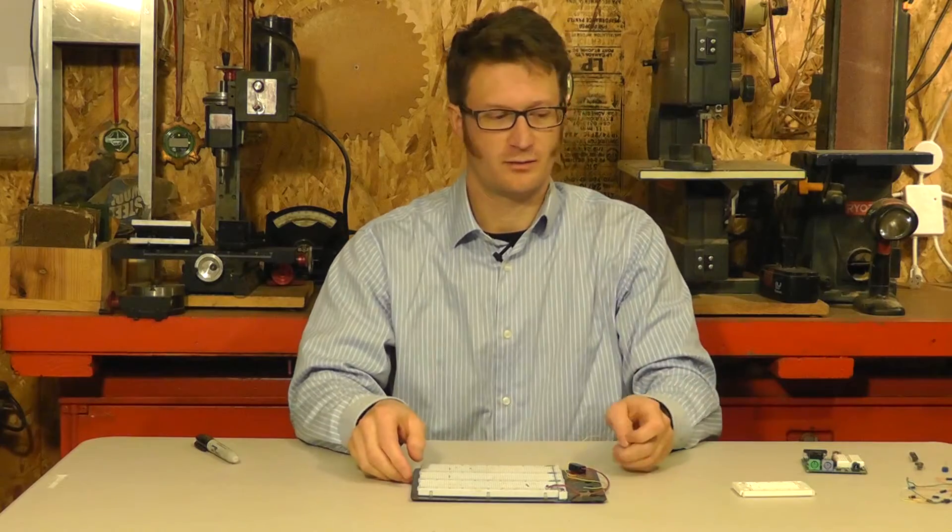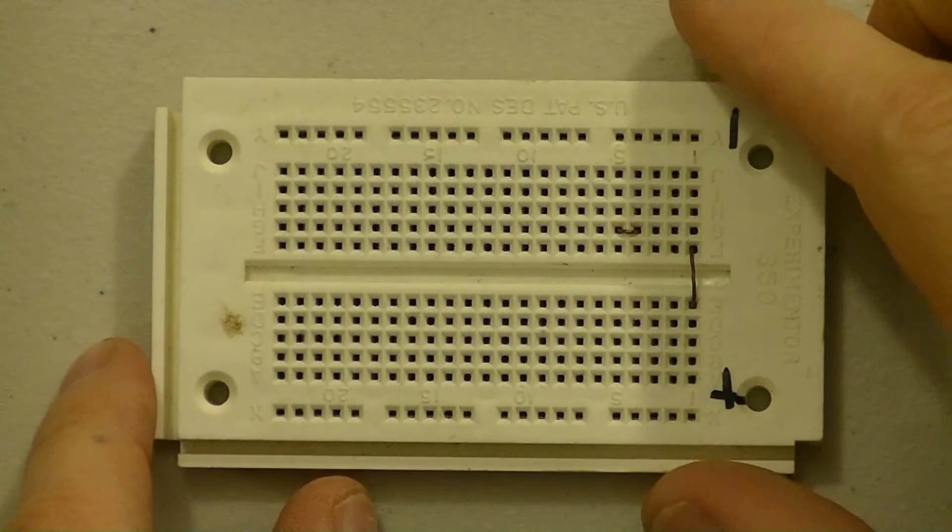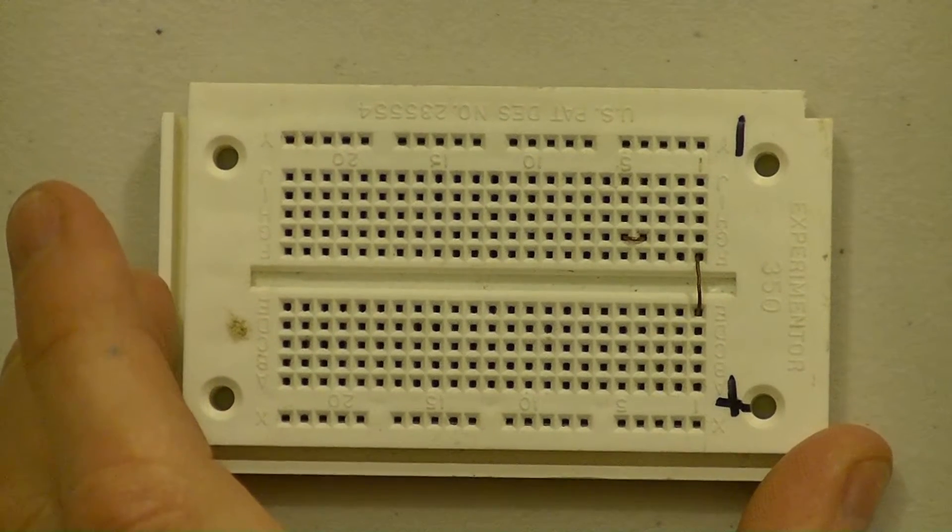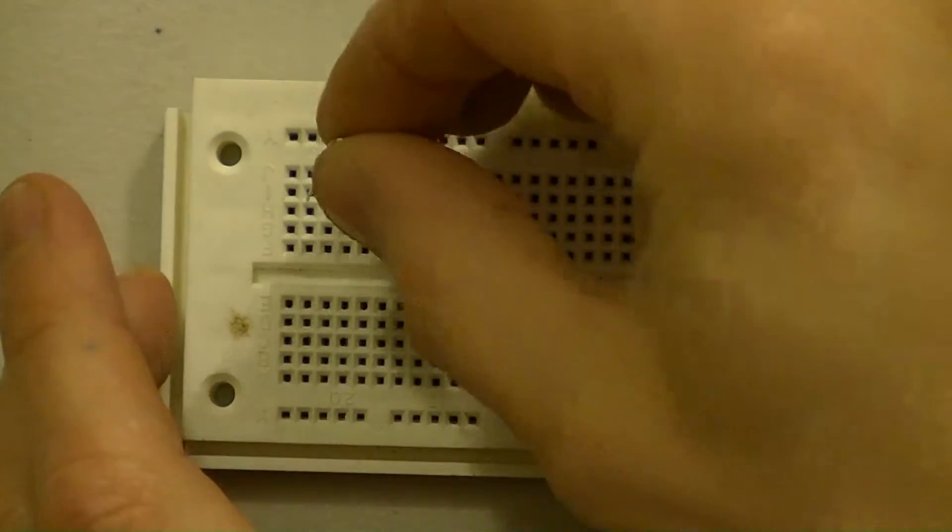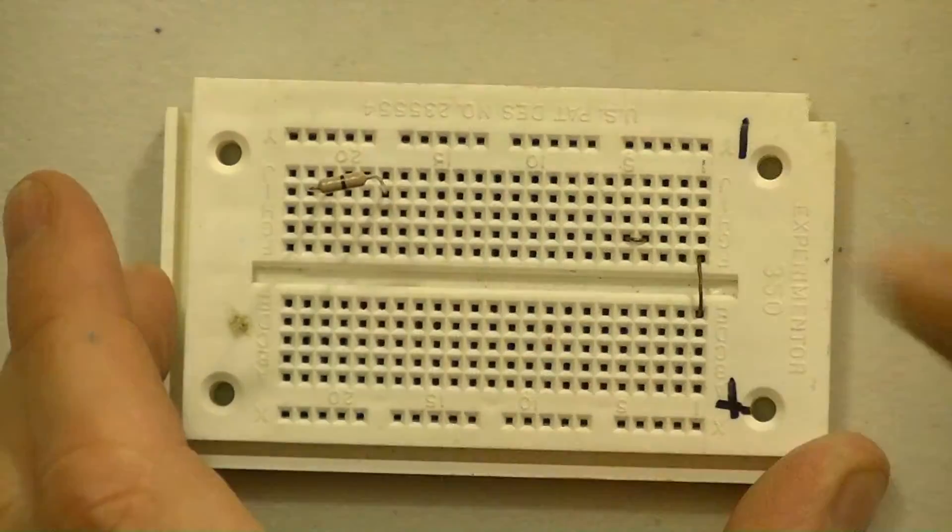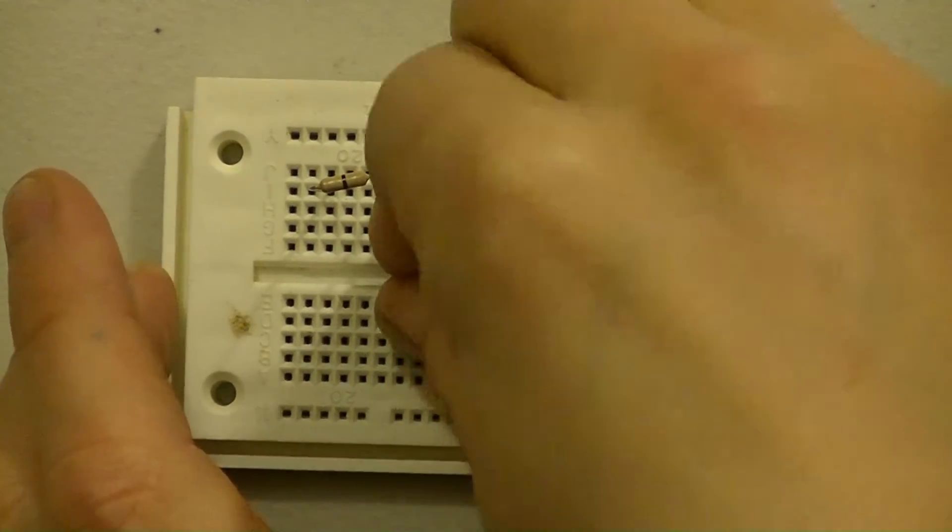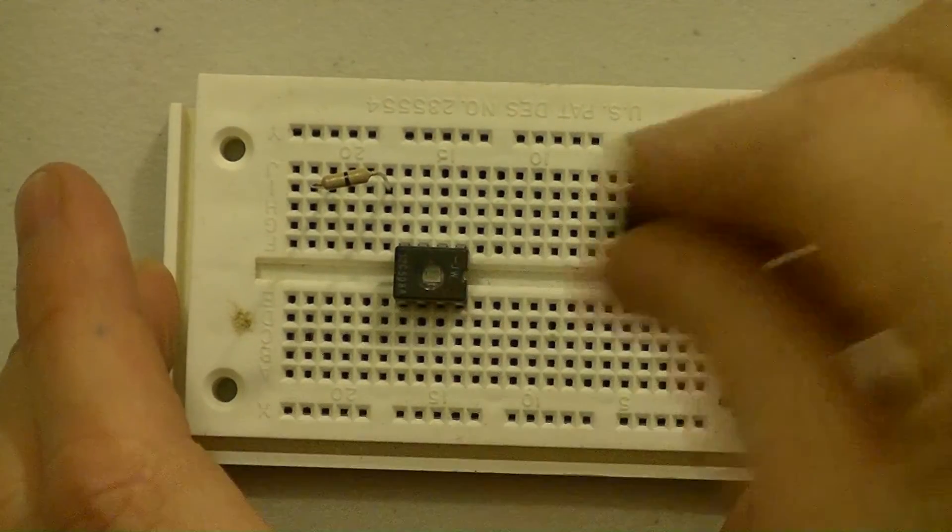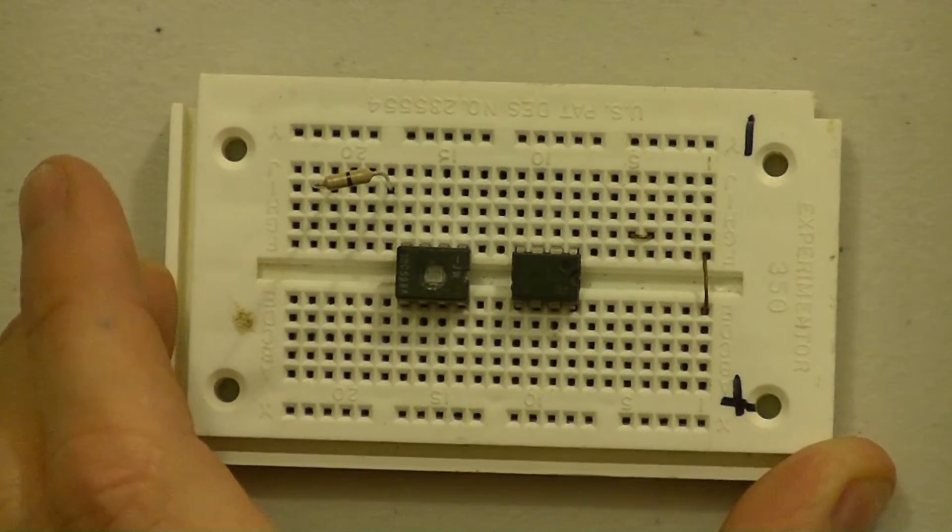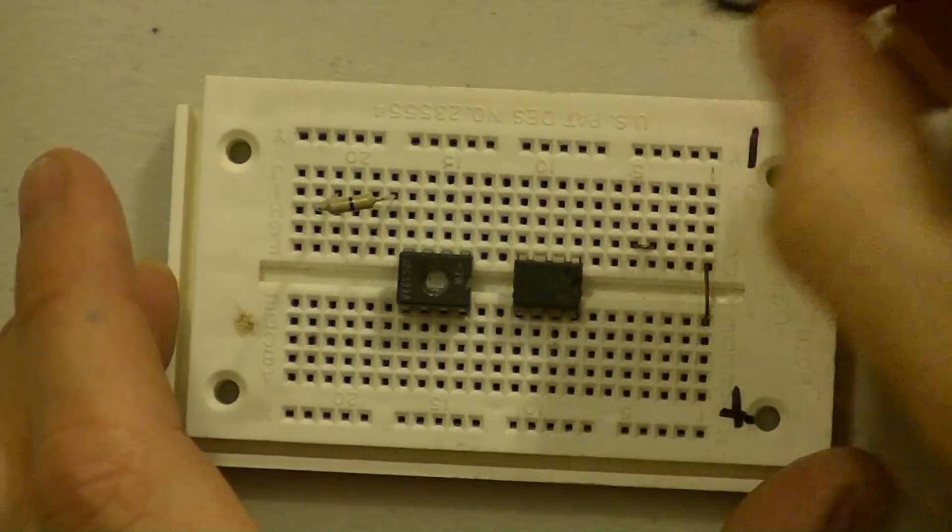And basically what it is, switch over to the overhead, is a bunch of holes in a piece of plastic here. And you can plug your devices into it just by inserting them into the holes. Okay, so there we go. I've got three devices on there, two chips and a resistor.